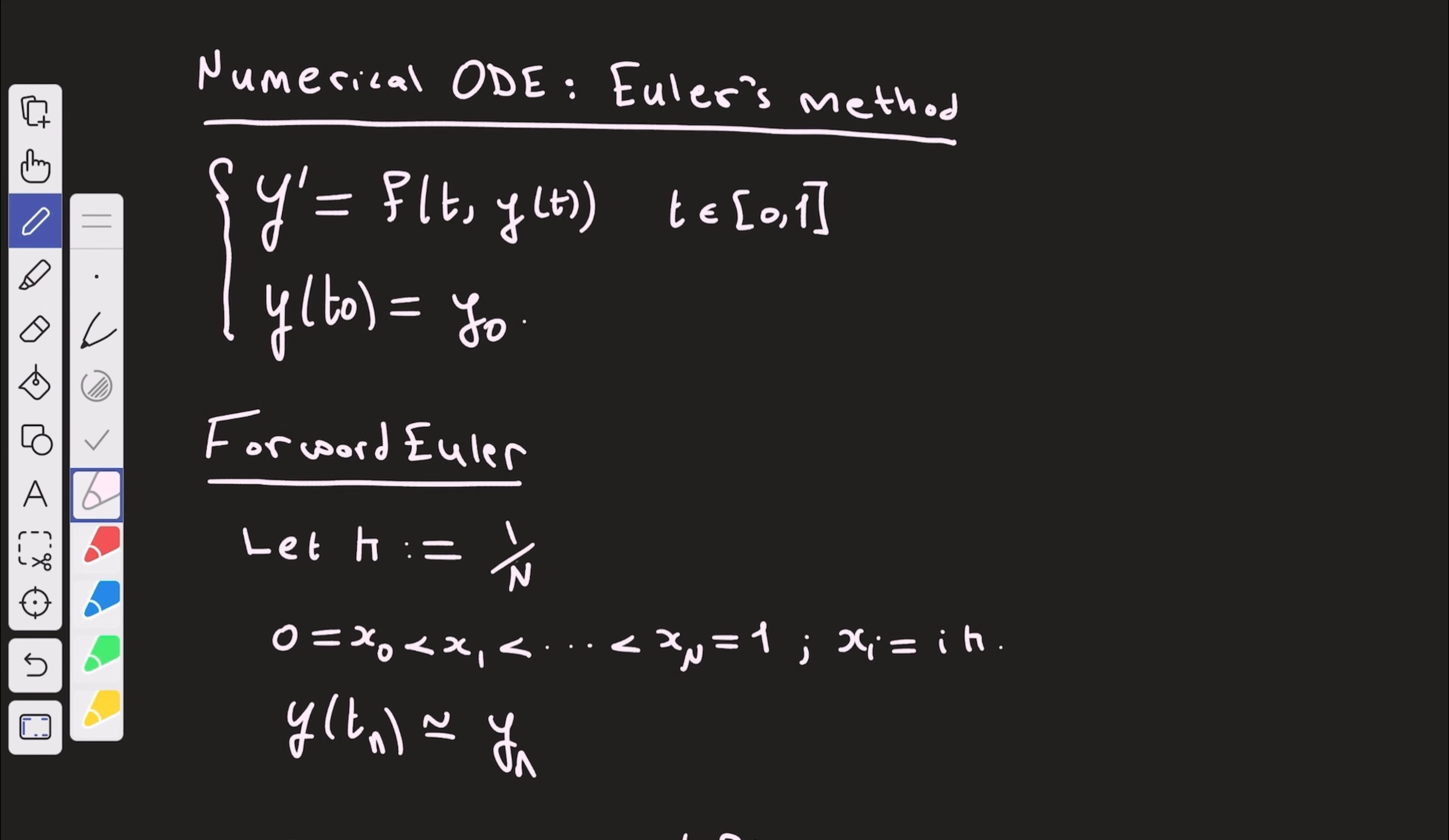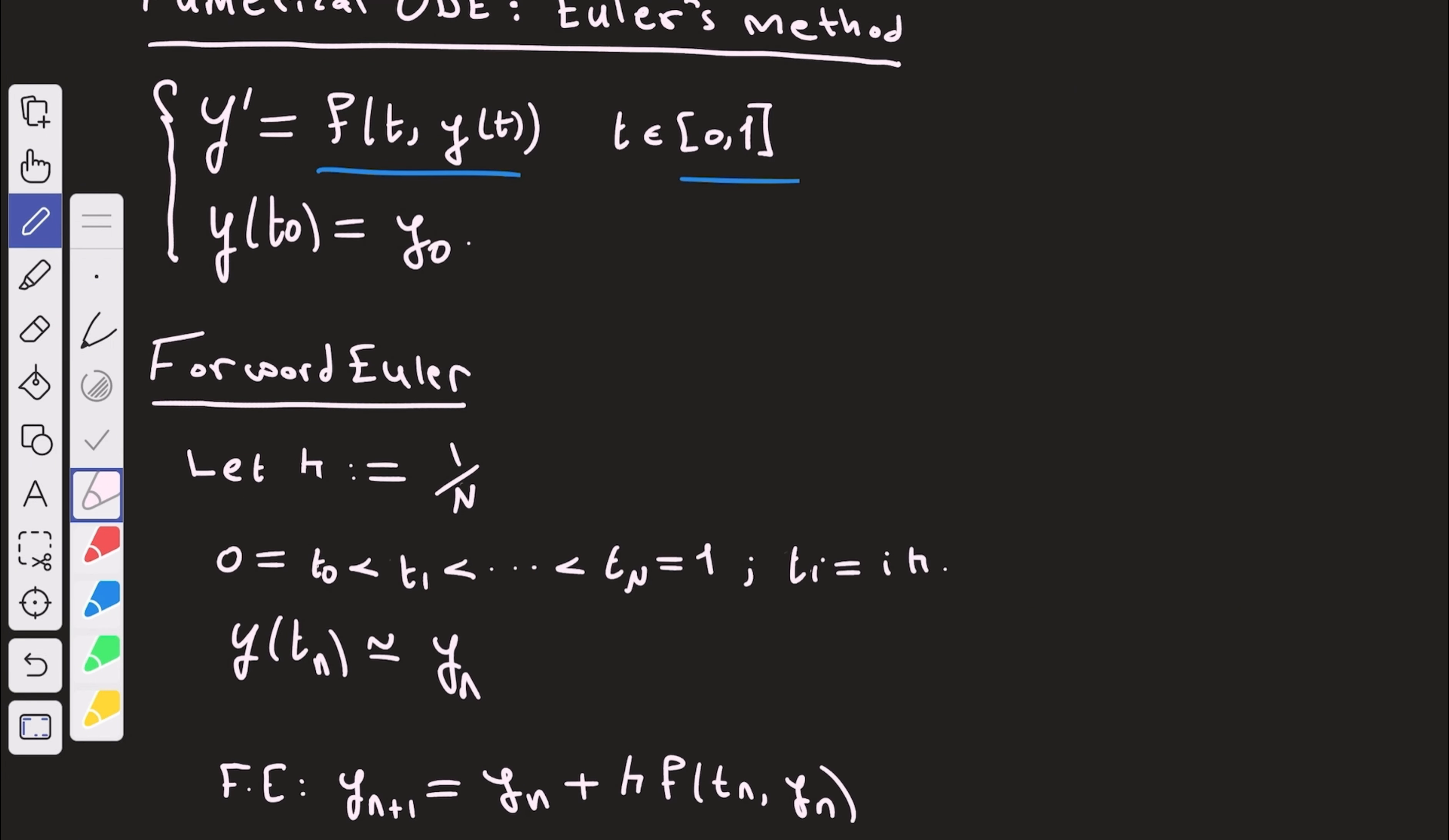So the problem we'd like to discuss in this video is that, given an ODE of the form y' equals f of t, y of t, and for simplicity, let us take the domain 0, 1, the interval 0, 1, and we have this initial value problem. And we'd like to find some numerical solution for this problem.